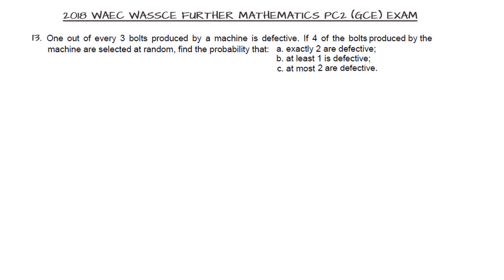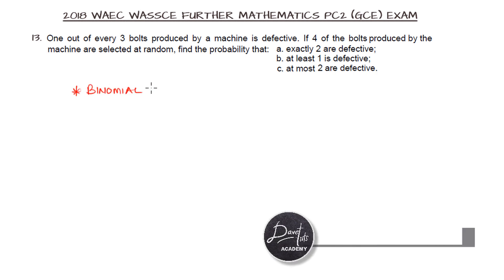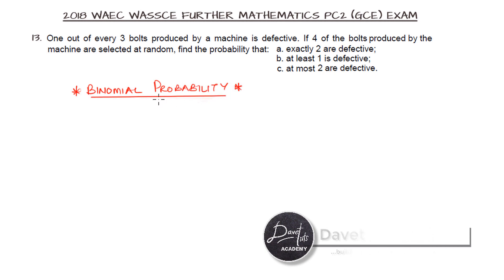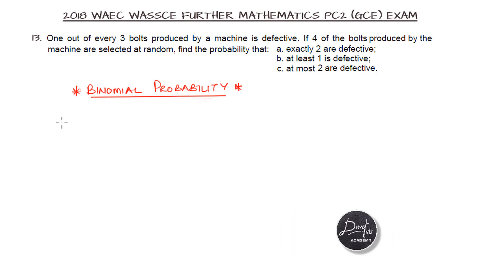Here we have this lovely question. We are told that 1 out of every 3 boats produced by a machine is defective. If 4 of the boats produced by the machines are selected at random, we have to find the probability that exactly 2 are defective, at least 1 is defective, or at most 2 are defective.